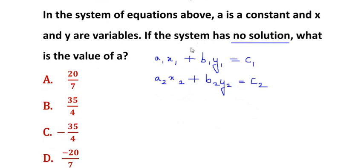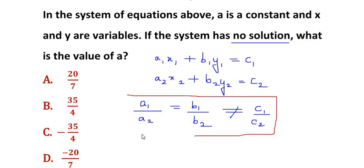The condition for parallel lines or for lines which have no solution is given as: a1 over a2 equals b1 over b2 not equals c1 over c2. This is the condition you have to remember for a system having no solution.